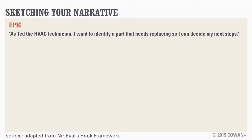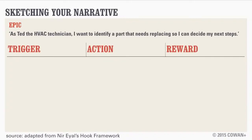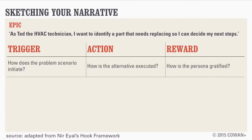Let's go back to this epic that we've been playing with from the H&H team. We're going to think about it in these terms: trigger, action, and reward. These are a set of concepts from psychology that I first learned about in this context working with Nir Eyal. The trigger is something that initiates the problem scenario — what is it that happens where we think the user wants to go do whatever it is we're thinking they want to do at this point?